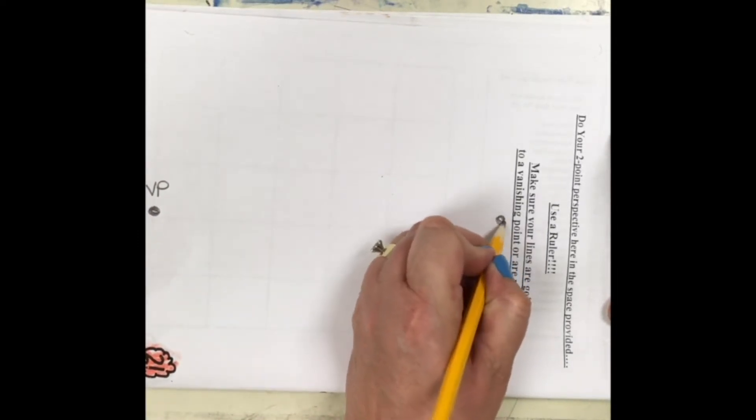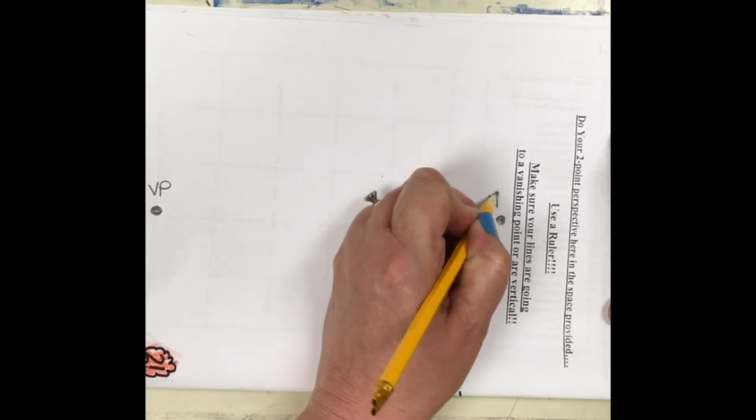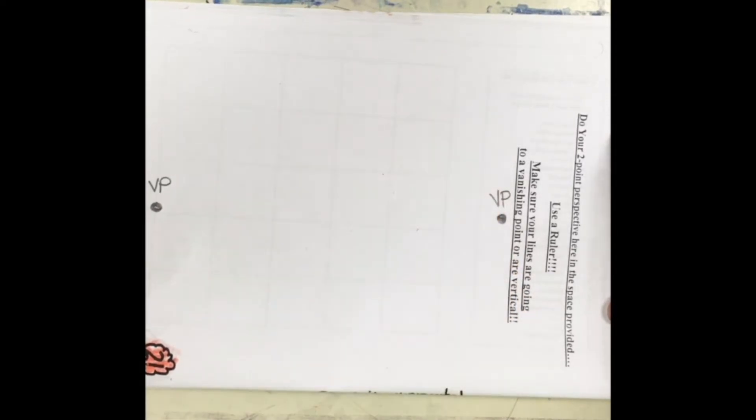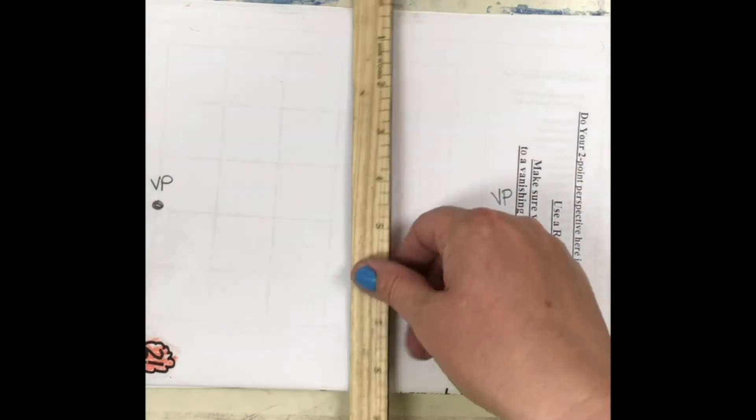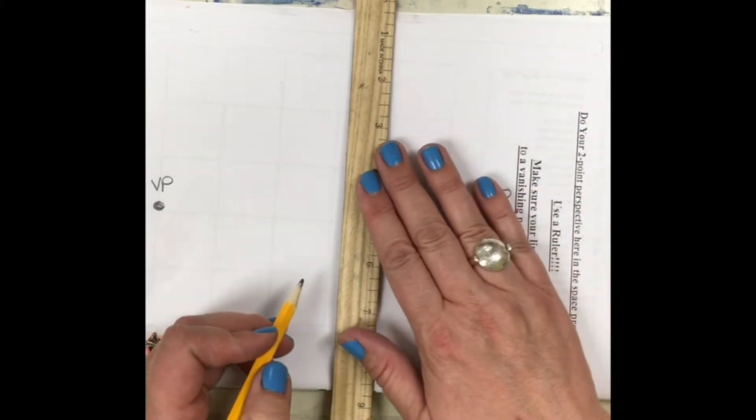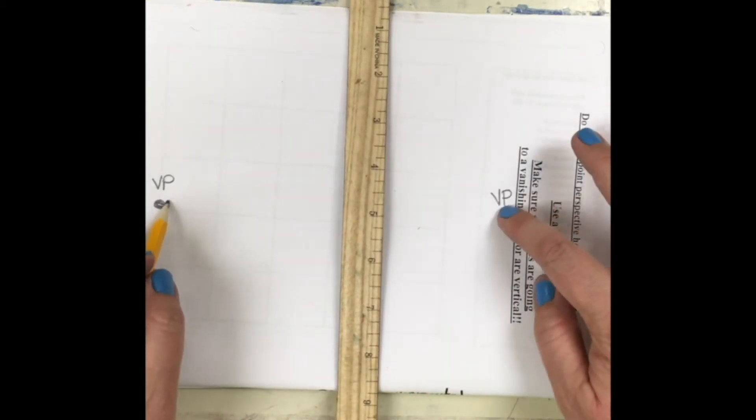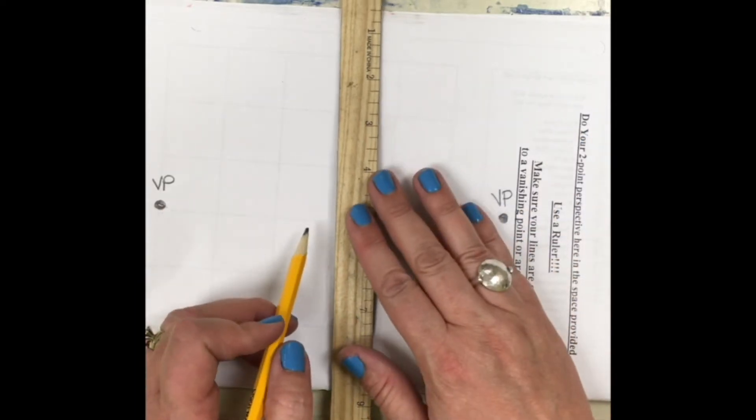So you have these two things that will help you give you that illusion called vanishing points. Vanishing points are if you could see forever and ever, where you finally couldn't see anymore, that would be where your space vanishes. So we have two of those on each corner or on each end.